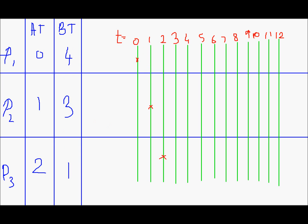At time instant 0 we have just one process so we have no option but to execute P1 and P1 shall go up till 4 units of time. At this instant P1 completes execution.